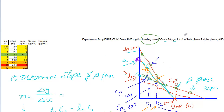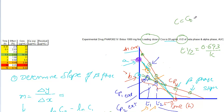We can also find the half-lives of the alpha and beta phases. Recall that T half equals 0.693 divided by k for a one-compartment model. For the two-compartment model, simply replace k with either beta or alpha to find the respective half-lives.